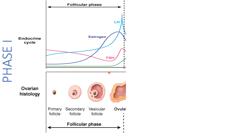Even though estrogen has a negative feedback effect on LH and FSH throughout the cycle, near the time of ovulation the spike of estrogen is associated with an overshooting of FSH and LH — particularly LH. You have to know that. I'm going to show you right now how questions come on this particular topic.